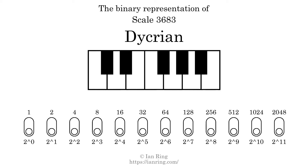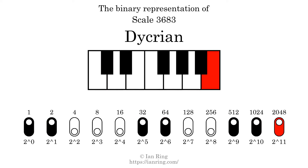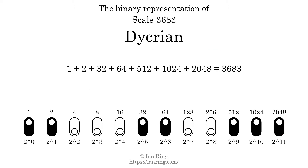The binary representation of this scale is determined by mapping tones of the scale to binary digits. Each binary digit represents a power of 2. To get the scale number, we add the powers of 2 together. The powers of 2 that are present in the scale, all added together, equals 3683. That is why the scale number, in decimal, is 3683.